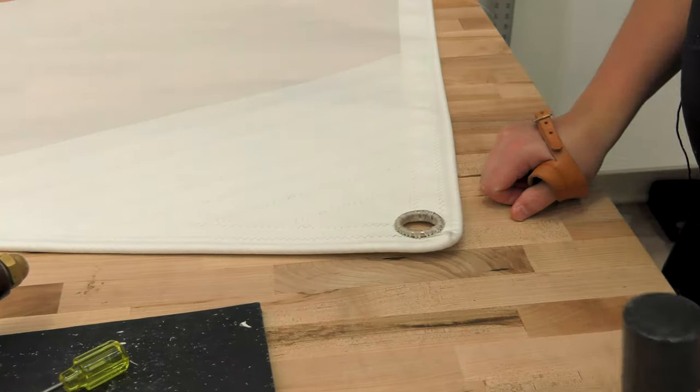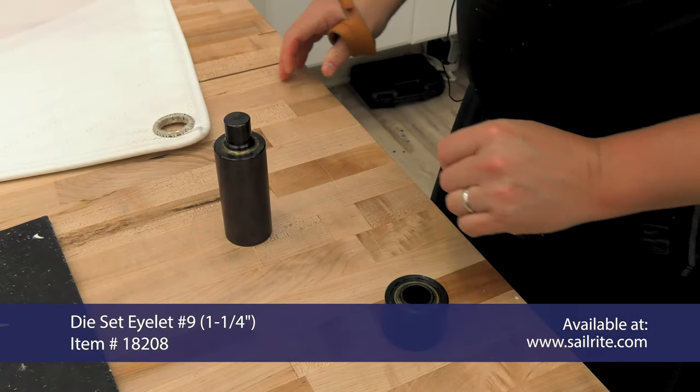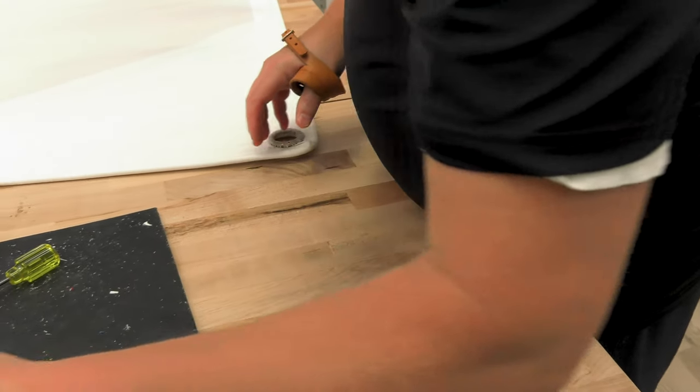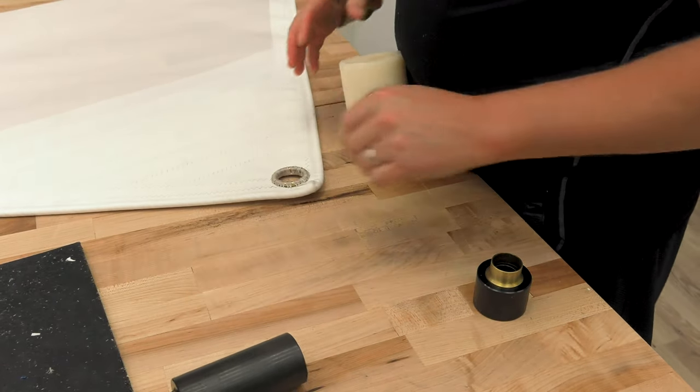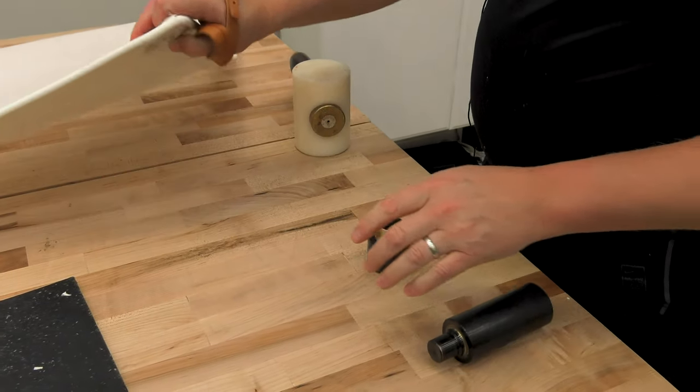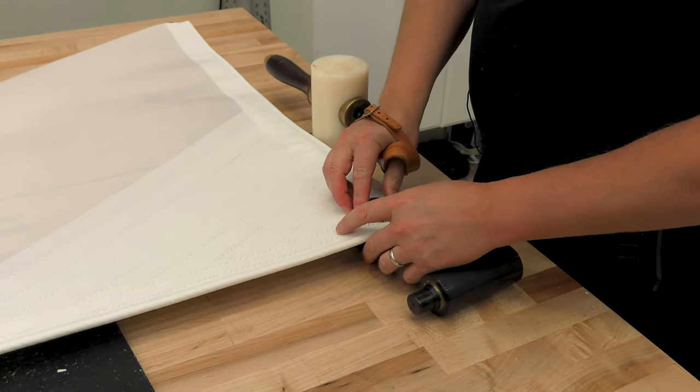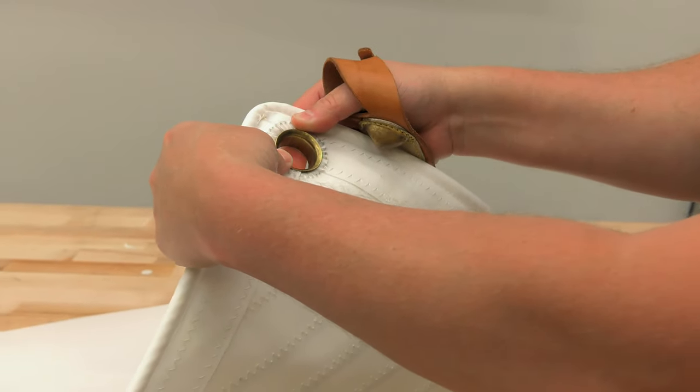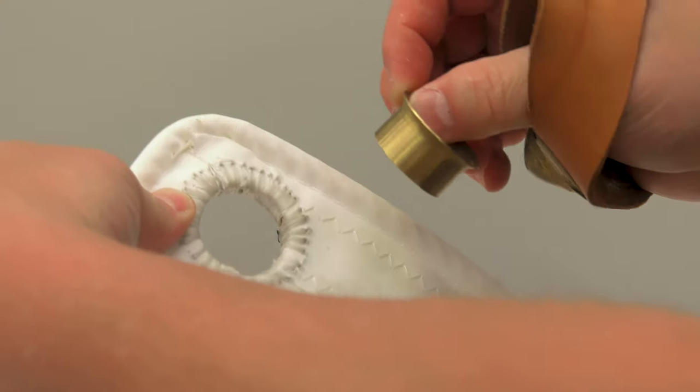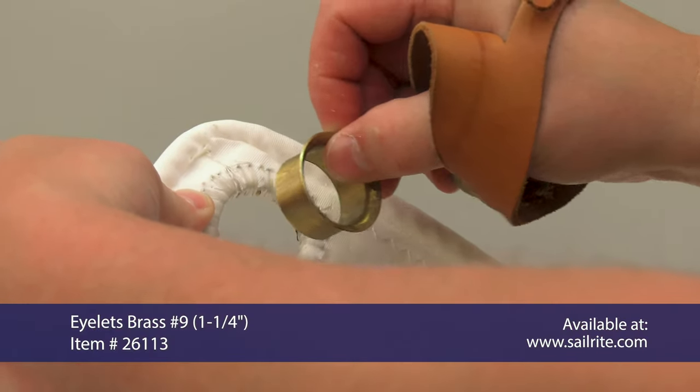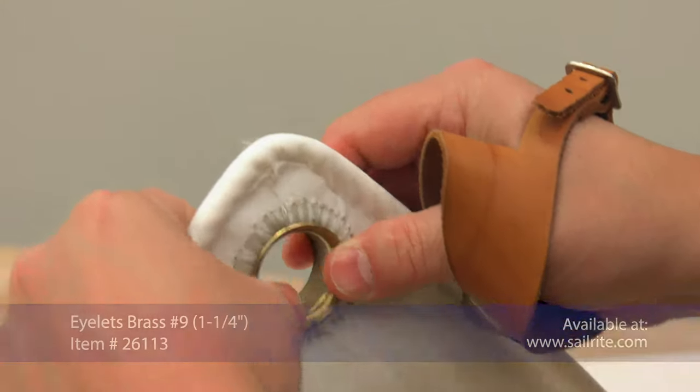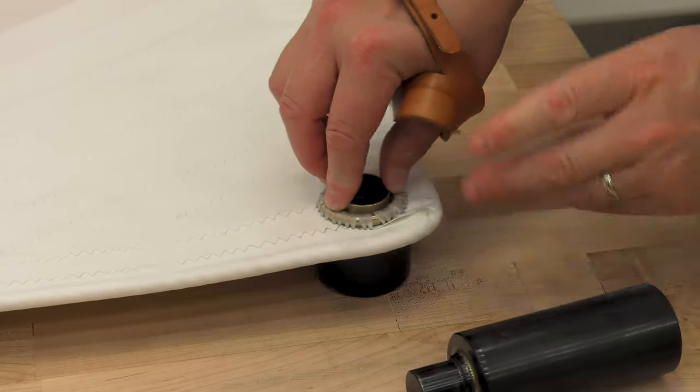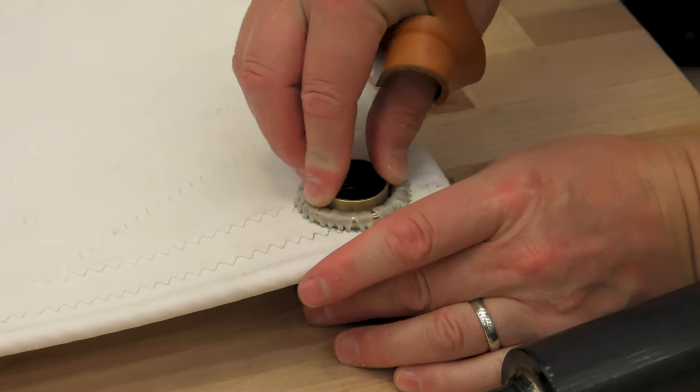For that, we've got our number nine eyelet die and our eyelet. This will just go on like that. You can see it fit on. It should go on where the initial flare is on the bottom side of the ring, where you can't see the ring. Put that on that side. Then we're going to come down and get it, make sure it's set on the die correctly.